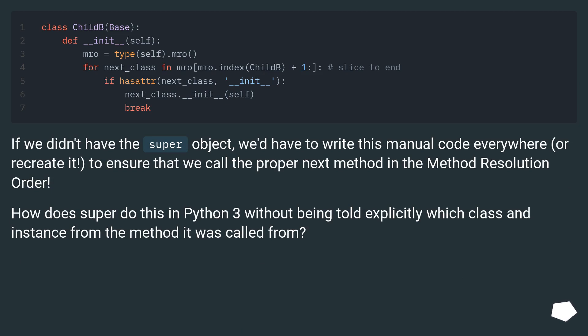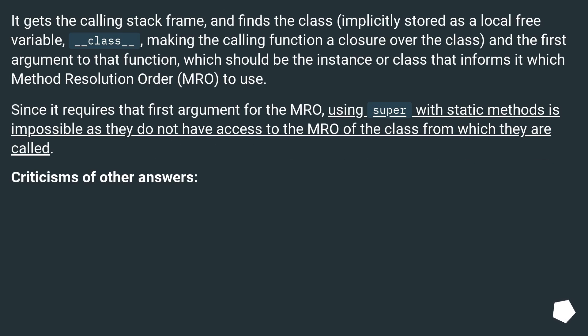How does super do this in Python 3 without being told explicitly which class and instance from the method it was called from? It gets the calling stack frame and finds the class implicitly stored as a local free variable `__class__`, making the calling function a closure over the class, and the first argument to that function informs it which MRO to use. Since it requires that first argument for MRO, using super with static methods is impossible as they do not have access to the MRO of the class from which they are called.